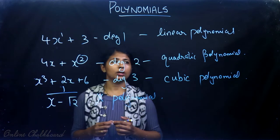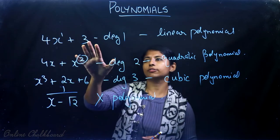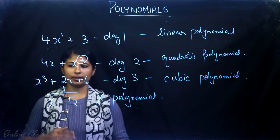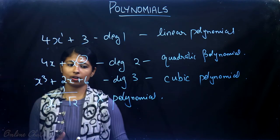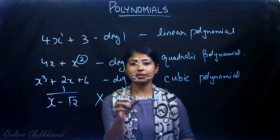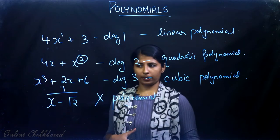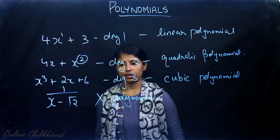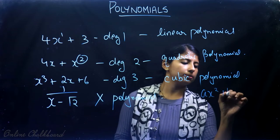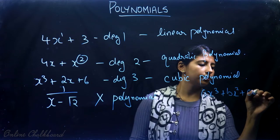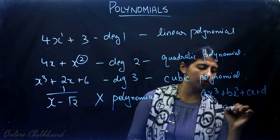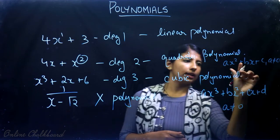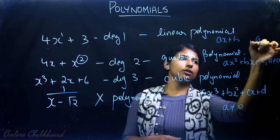We also learned about terms: a polynomial with two terms is a binomial, three terms is a trinomial, and with many terms it's called a polynomial — 'poly' meaning many. The general form of a cubic polynomial is ax³ + bx² + cx + d where a ≠ 0; quadratic is ax² + bx + c where a ≠ 0; and linear is ax + b where a ≠ 0.